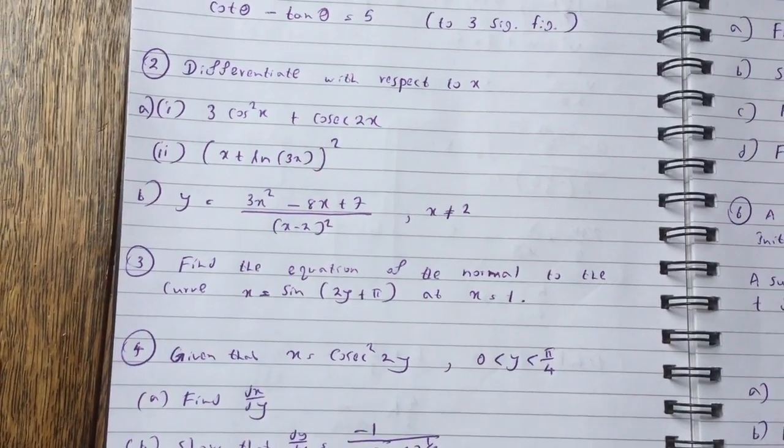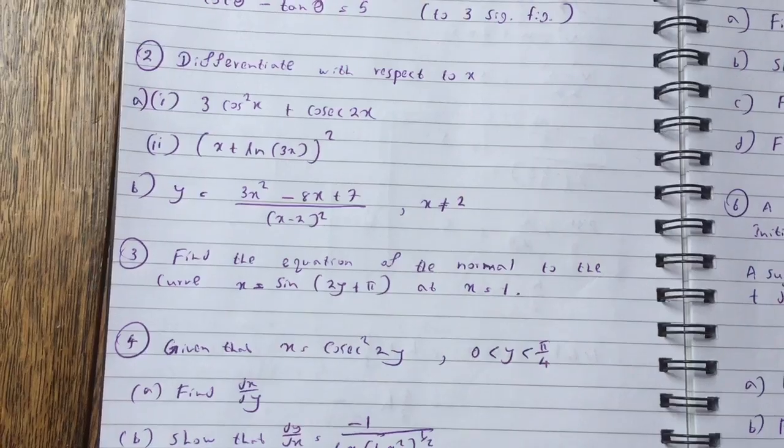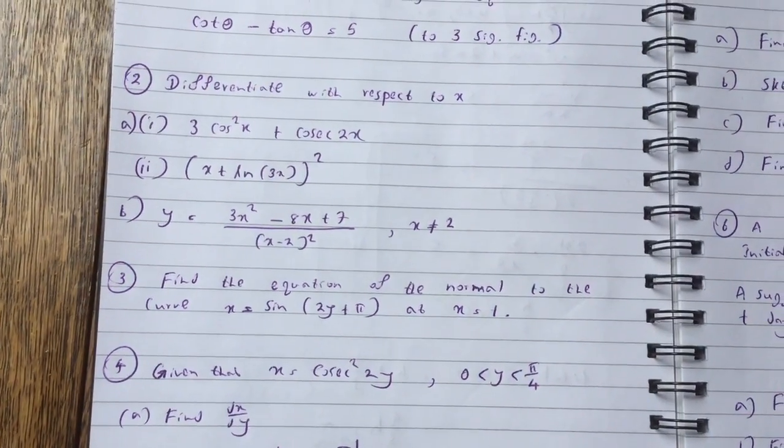Part B, y equals 3x squared minus 8x plus 7 over x minus 2 squared, where x is not equal to 2.